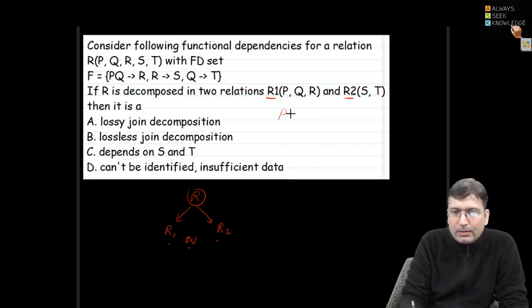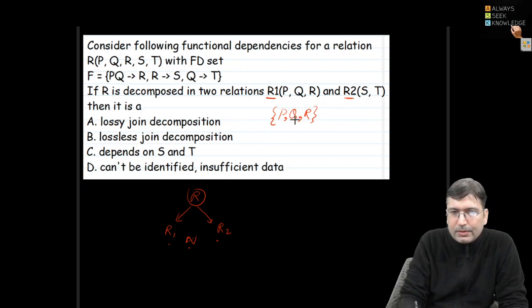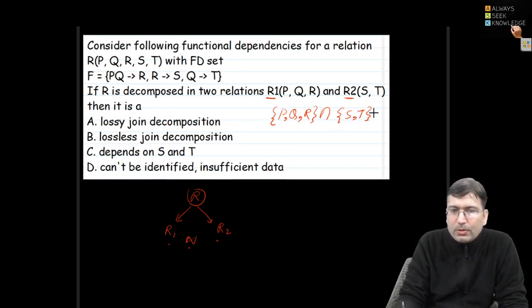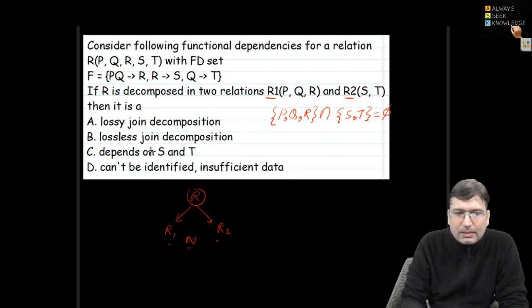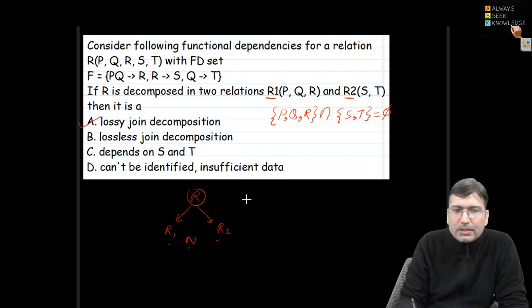If we find the intersection of the attribute set of R1, which is {PQ}, and the attribute set of R2, which is {ST}, there is nothing common — we get the empty set. So we need not check any further condition; we can say this is a lossy join decomposition. The answer is A.